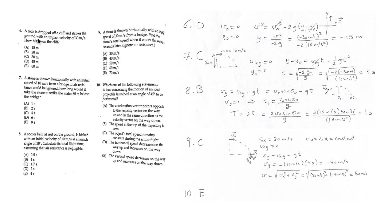For question 6, a rock is dropped off a cliff and strikes the ground with an impact velocity of 30 meters per second. This is free fall motion, so V0 equals 0. Taking the y-axis positive upward, g is negative downward. The kinematic equations for free fall are the same as for one-dimensional motion, except replacing a with minus g and x with y.